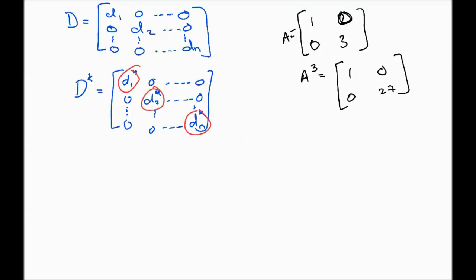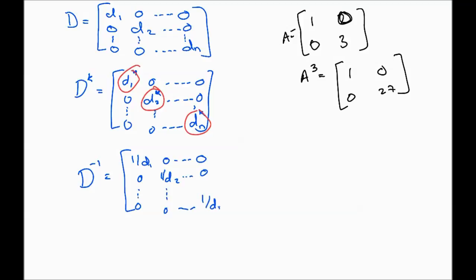Another property is the inverse. The inverse of a diagonal matrix is simply calculated by taking 1 over each diagonal entry — so 1/d1, 1/d2, through 1/dn. Of course, for the inverse to exist, none of the diagonal entries d1, d2, through dn can be zero, because that would give us one over zero, which is undefined.